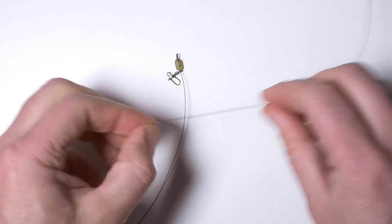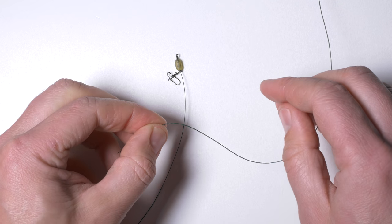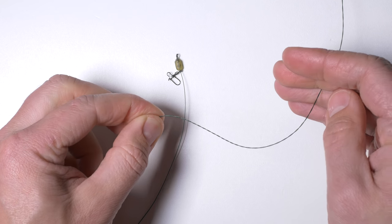Then I will attach this twizzle loop to the swivel using greener's knot.